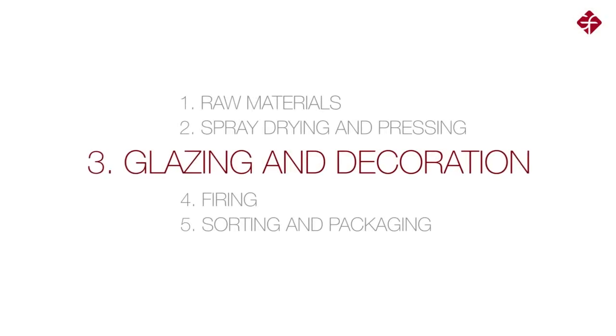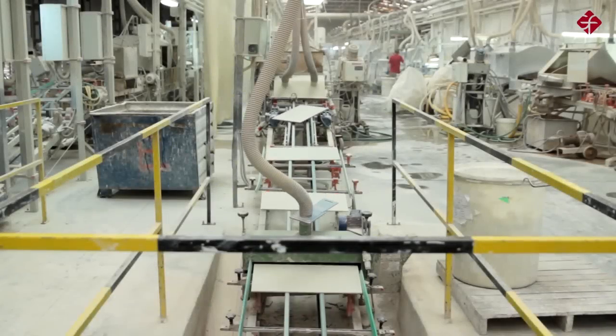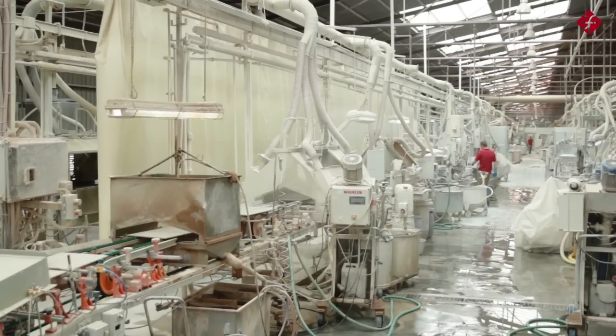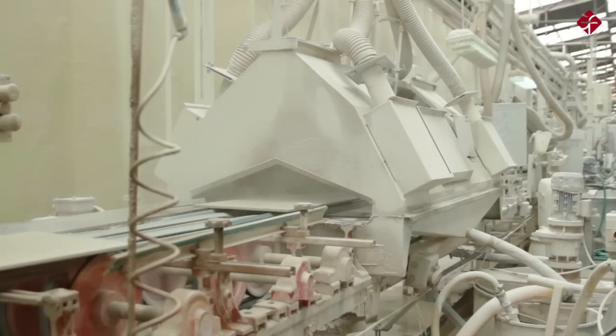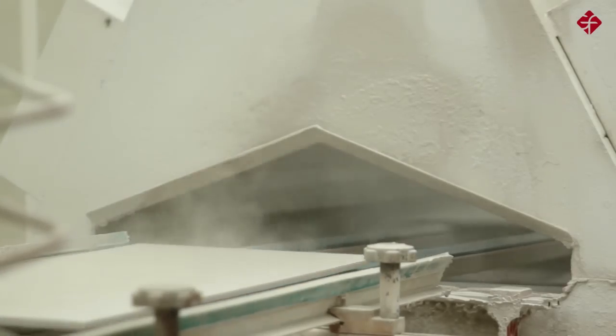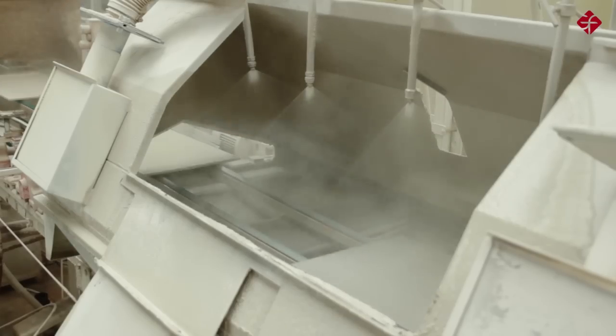Glazing and decoration. The tiles go directly to the glazing line where several coats of slip and glaze are applied. The englobe is an interface material that lays between the clay base and the glaze that is to be applied to it. One layer of glaze is applied on top of the englobe to provide a base for the decoration.